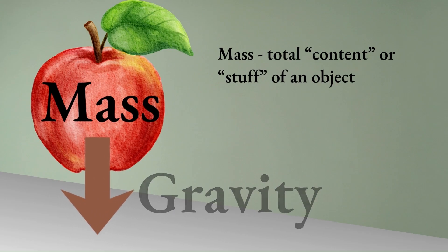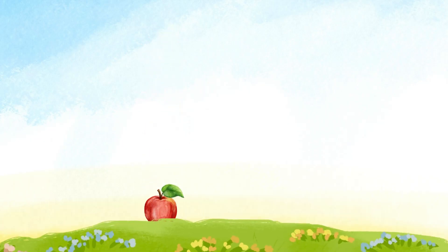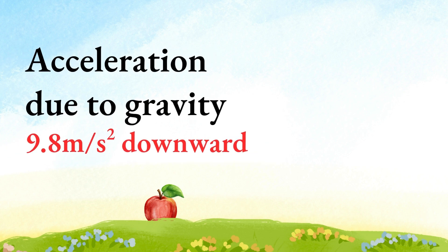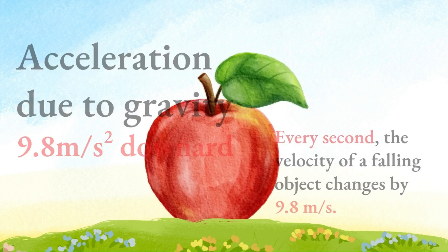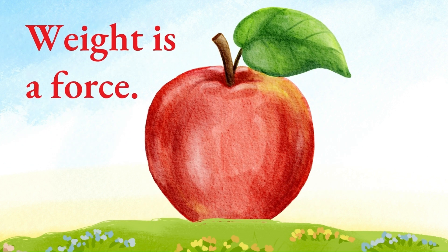This pull causes the apple to fall faster and faster. This change in speed is what we call acceleration. On earth, this acceleration due to gravity is about 9.8 meters per second squared. This is always directed downward. We'll explore that more in a future video. But for now, just remember: weight is a force and it points downward.